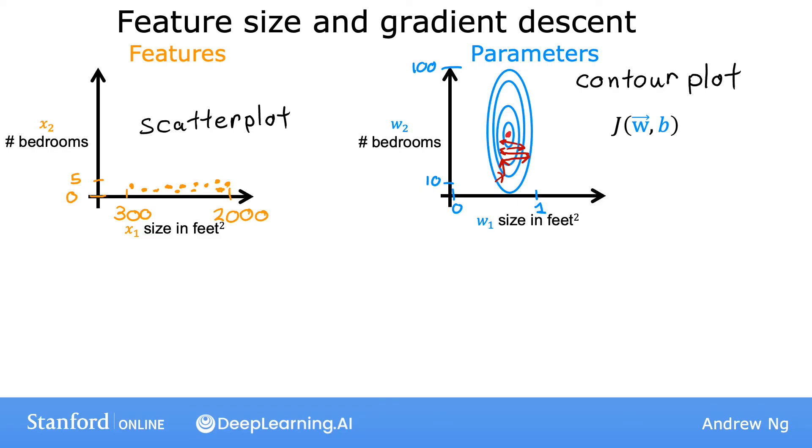In situations like this, a useful thing to do is to scale the features. This means performing some transformation of your training data so that x1 might now range from 0 to 1, and x2 might also range from 0 to 1. So the data points now look more like this, and you might notice that the scale of the plot on the bottom is now quite different than the one on top. The key point is that the rescaled x1 and x2 are both now taking comparable ranges of values to each other.